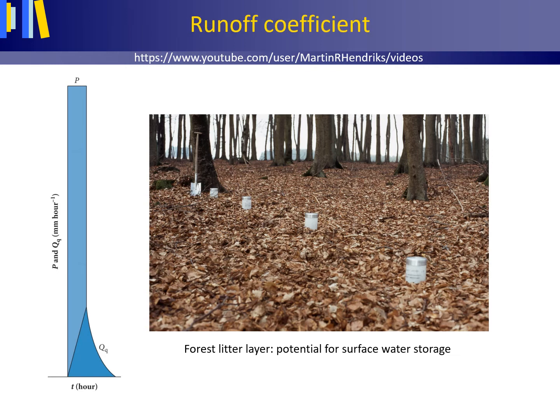The runoff coefficient of a stream can simply be determined by dividing the discharge volume in millimeter by the received precipitation volume or precipitation depth in millimeter, and then multiplying by 100 to convert from fraction to percentage. The term runoff and runoff coefficient should be taken as the discharge of a stream. Another use of the term runoff is as a synonym for overland flow.